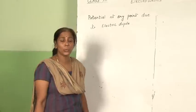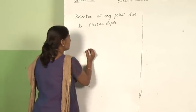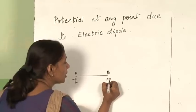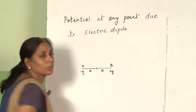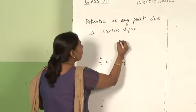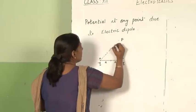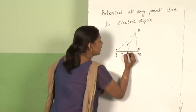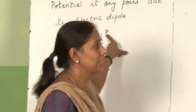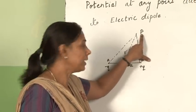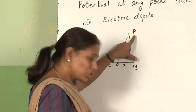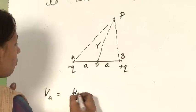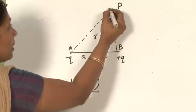Now, let us see the potential at any point due to an electric dipole. At point A we have a minus q charge, and these charges are separated by a distance 2a — this is a dipole system. Take any point P; we are going to find out the potential at point P. So, let us find out the potential at P due to this minus q charge, and the potential at P due to this plus q charge.